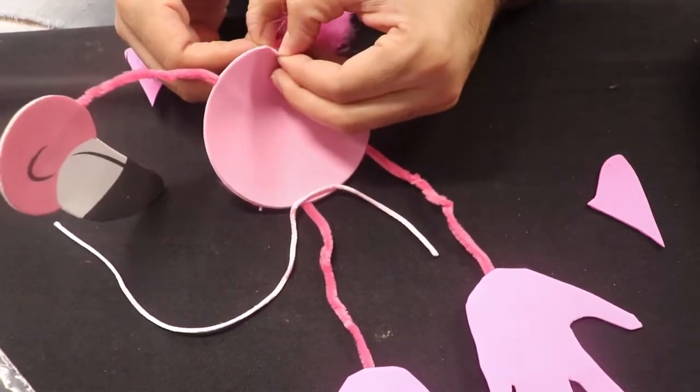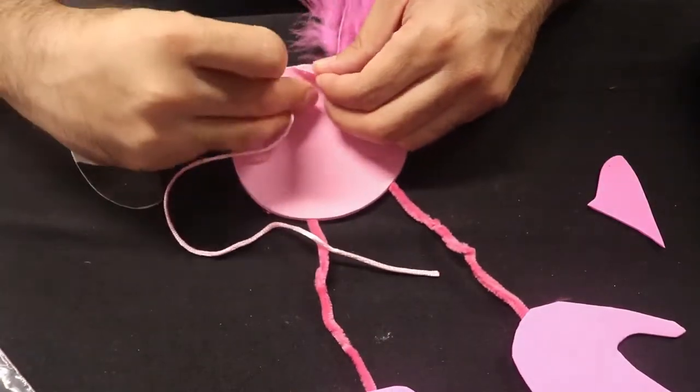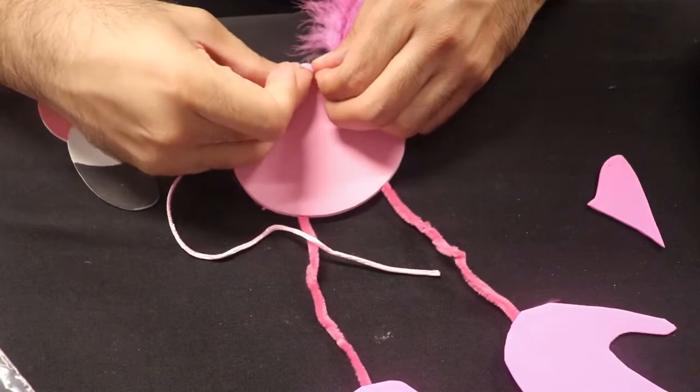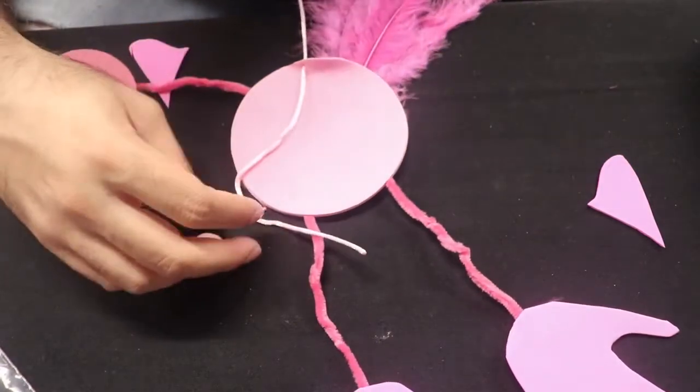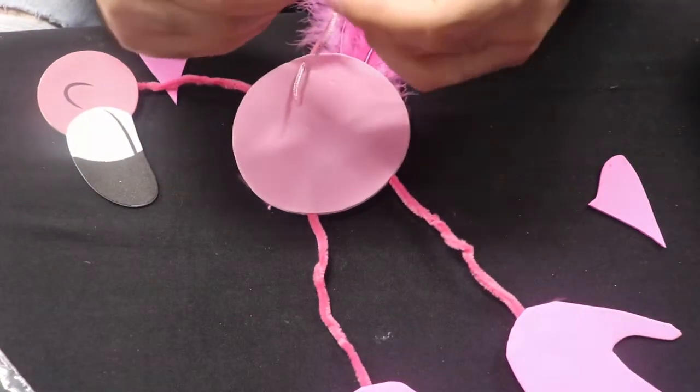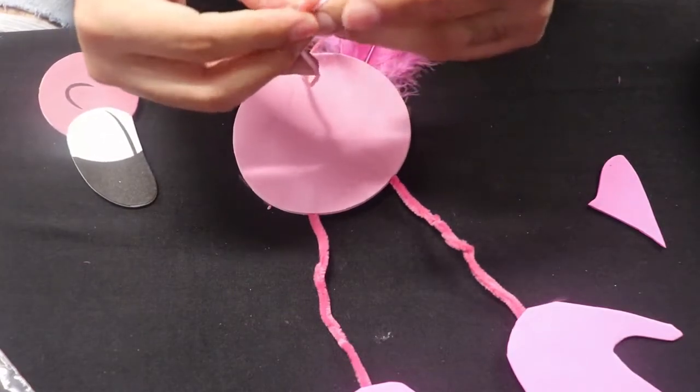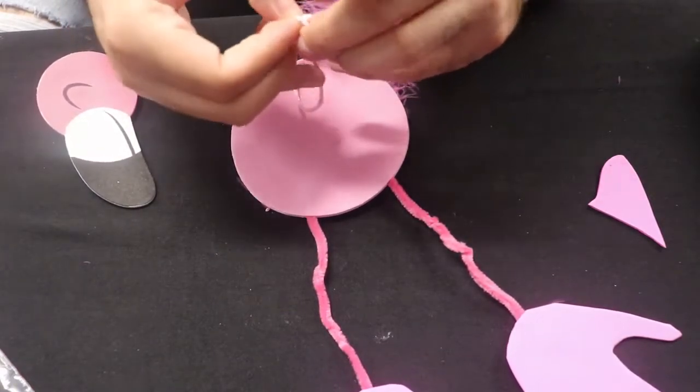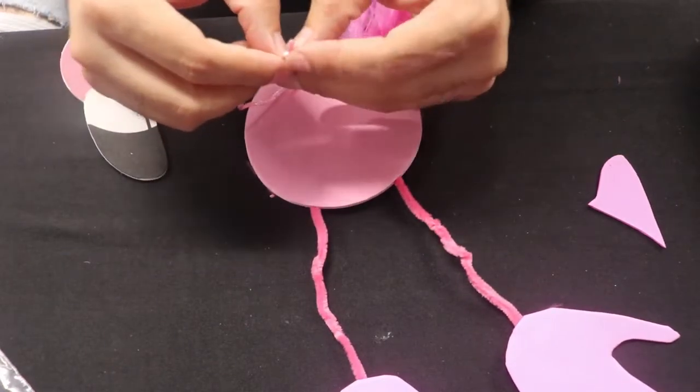But I managed to separate it just enough, which is really good. But if not, what you can do is have a parent, or not a little friend but an older friend, or you know, a sibling or guardian help you just punch a hole through it.